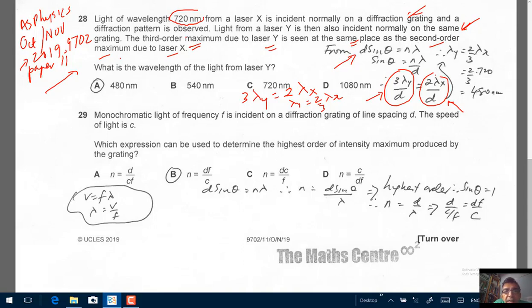So we can write your lambda Y as 2 over 3 of lambda X. Lambda X, they gave me the wavelength is 720, that's what you see here. So 2 over 3 times 720 is 480 nanometer. Correct response A.